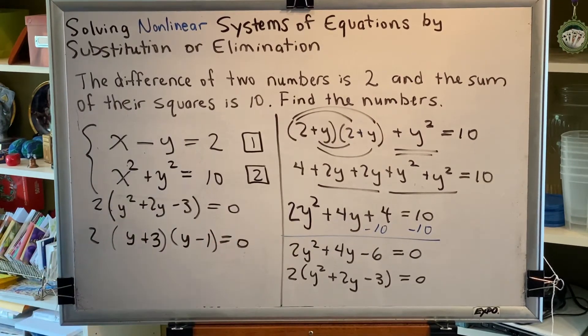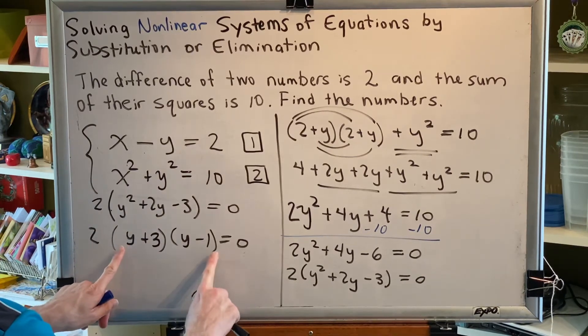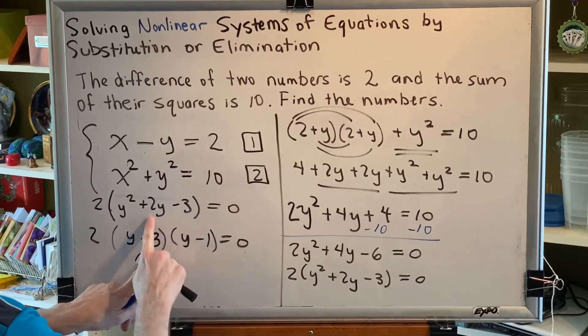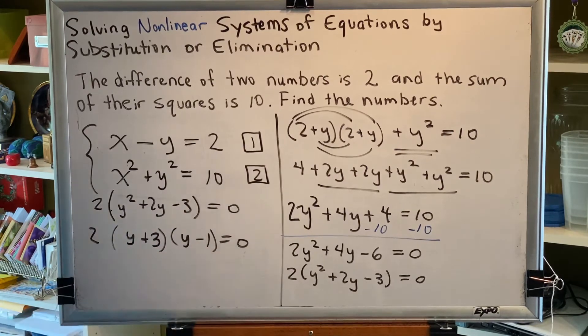And there we go. We've done our factoring. We can always check factoring with FOIL. y squared minus 1y plus 3y would make plus 2y minus 3. Alright, next, zero product property.